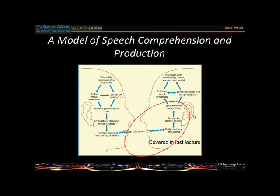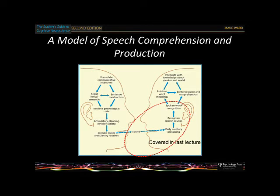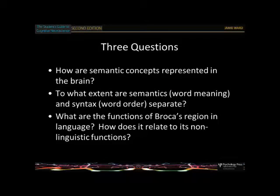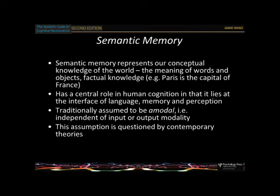Today I want to talk about how the meaning of words and other concepts are represented in the brain — this relates to semantic memory, how it's structured and where it is in the brain. Then I'll talk about sentences: how we process them, which involves a mixture of word meanings plus syntax — the order in which words can be combined to form higher-order meanings. I'll also talk particularly about Broca's area and how semantics and syntax are separate in sentence processing.